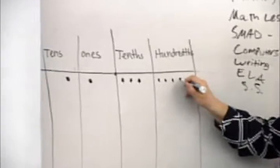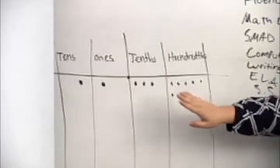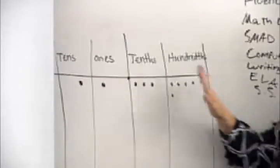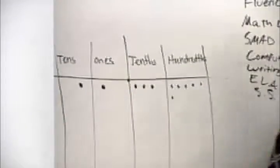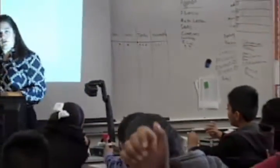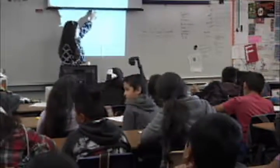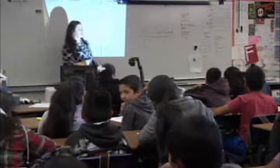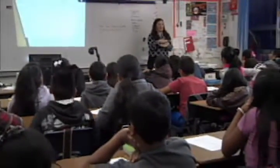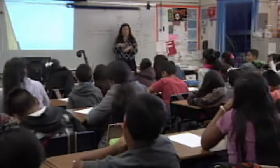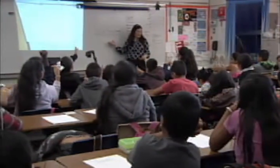The teacher presents $11.36 on a place value chart and asks students to justify it. 'I want you to justify to your partner that my place value chart represents $11.36. Turn and talk.' After partner discussion, the teacher asks for thumbs up or disagreement: 'Does this represent $11.36?' The teacher notes: 'I'm seeing some agreement.'